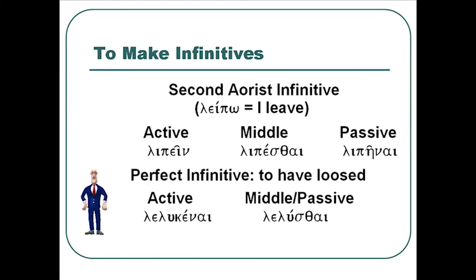The perfect active form is lelukēnai, and the middle-passive for the perfect is lelusai. Notice on the middle-passive form there's no mediating vowel between the ending and the root vowel. These endings are all fairly easy — we don't have the plethora of endings for first, second, third person. Notice how many of the endings end in this diphthong alpha-iota, the -i ending. A lot of times when you see a verb with this -i ending, start thinking infinitive.